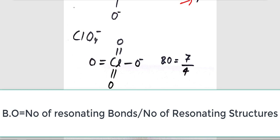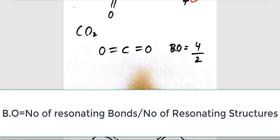For ClO4⁻, sorry, my bad, we have total number of resonating bonds as 7 and this 4 over here. For CO2, total number of bonds is 4 and this 2 from this place.